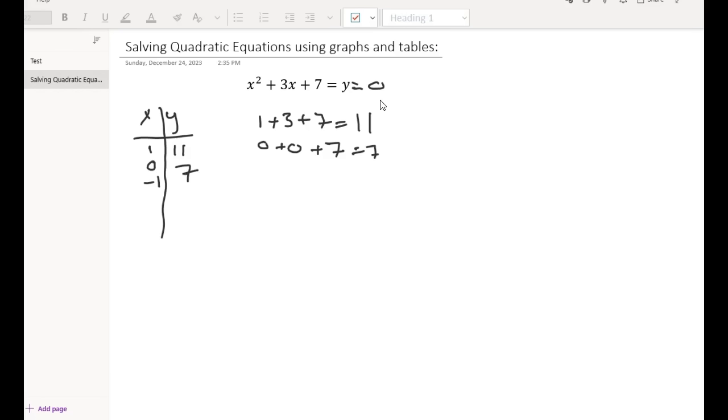Now when x is minus 1, we have minus 1 squared is 1 plus 3 times minus 1 plus 7 equals 1 minus 3 plus 7. So that's equal to 5. So let's just plot these three points and see what it looks like.